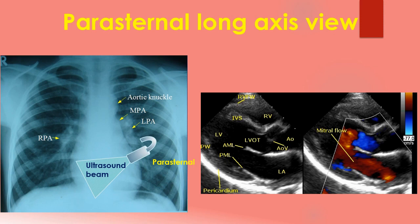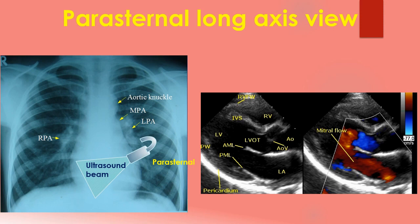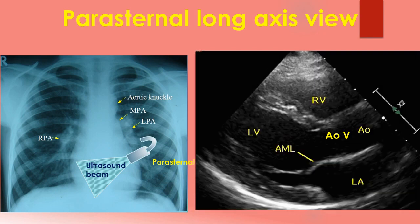The first view to be obtained is often the parasternal long axis view, which images the heart from the base to apex. The transducer is placed in the left parasternal region and fine adjustments in angulation are made till a suitable view is obtained. Usual structures imaged in this view are the right ventricular free wall and outflow region, interventricular septum, aorta and aortic wall, left ventricular outflow tract, anterior and posterior mitral leaflets, left ventricular cavity, posterior wall of the left ventricle and left atrium. Colour Doppler imaging is used to image the flow directions and any abnormal flows. Here is an animated view from the parasternal long axis.